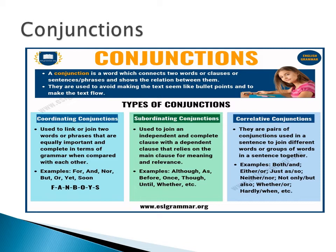There are three types of conjunctions: coordinating conjunctions, subordinating conjunctions, and correlative conjunctions. At this time, we will zero in on the two types: coordinating and subordinating conjunctions.